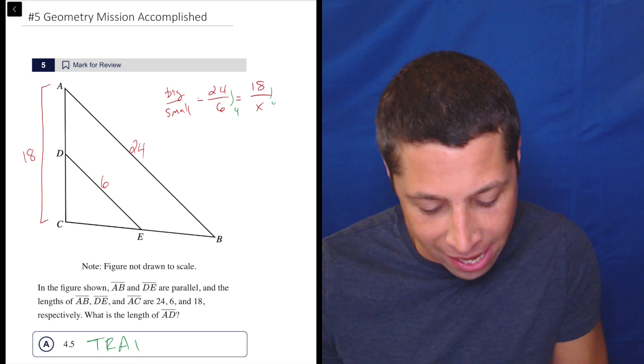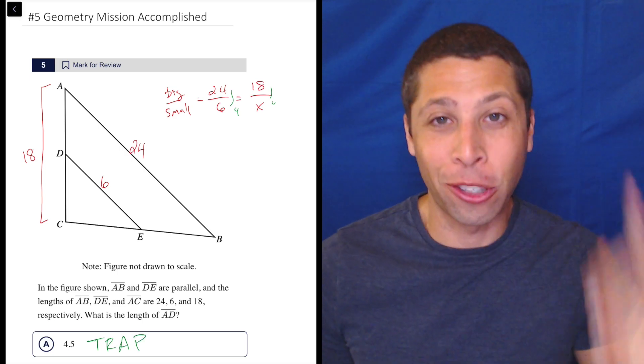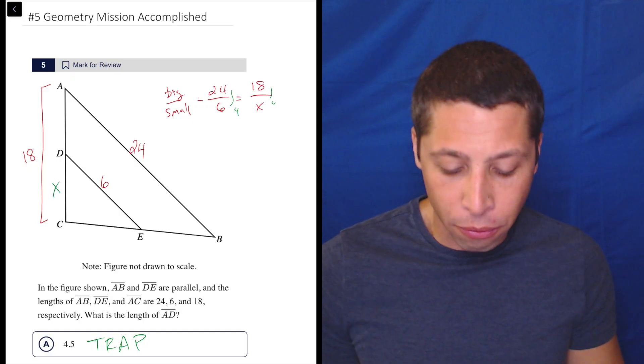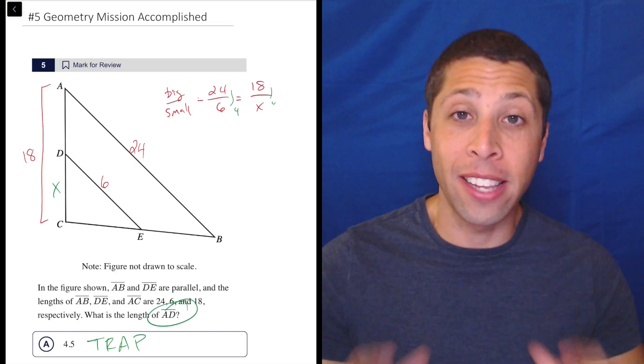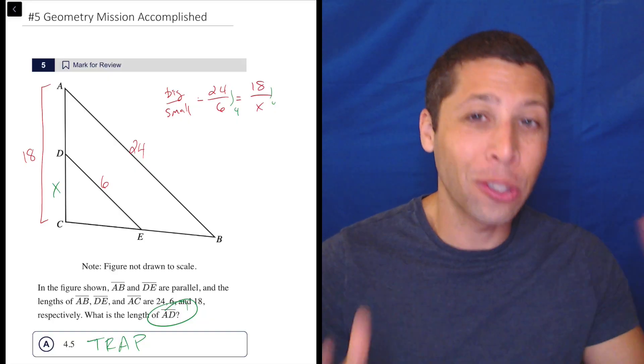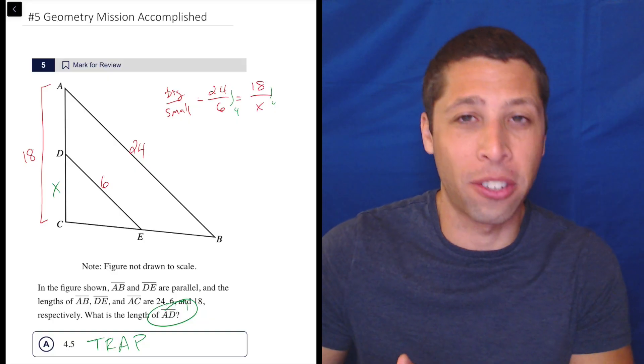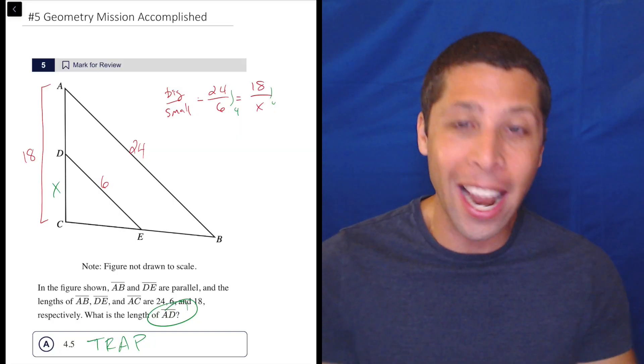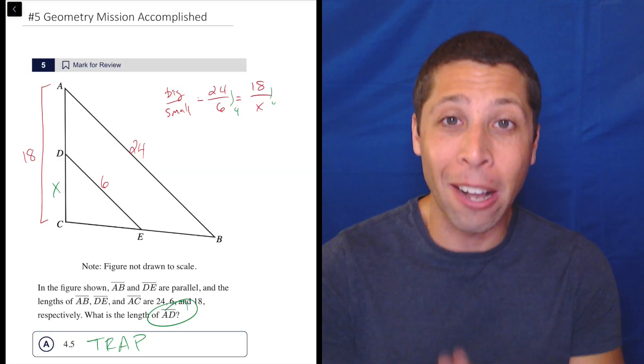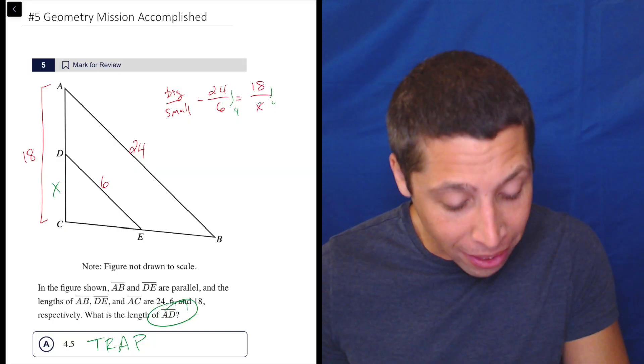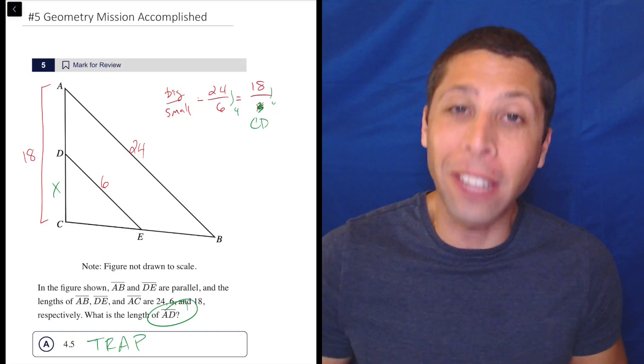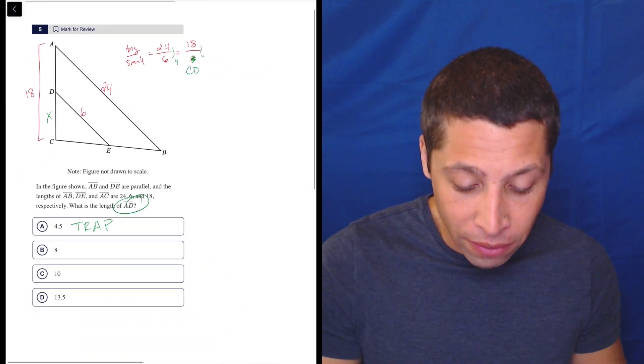So here we go. Choice A is 4.5. But that is the trap. And why is that the trap? Because they didn't want the other side. This is what we solve for CD, but they want AD. This is a very common move that they make in geometry questions where they ask for something different from what your natural process is going to have you solve for. This is a mission accomplished trap. We get x equals and we feel like we've accomplished the question. We've solved everything, but there's something else to do. This is easily avoided by instead of using x, just label things in your math the way that they're labeled on the picture.